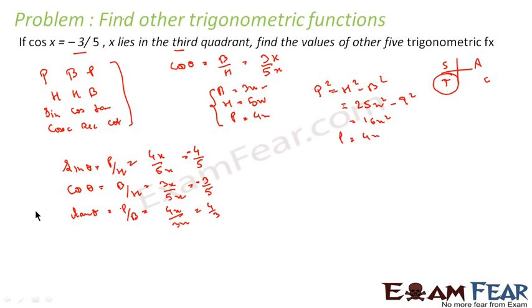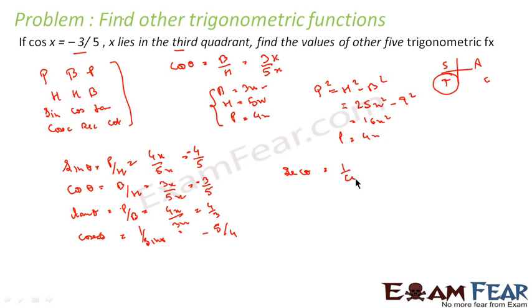So sin is negative, cos is negative, and tan is positive. This gives us the values of sin, cos, and tan. Now we have to find the values of cosec, sec, and cot. Cosec theta is 1 by sin theta, which becomes minus 5 by 4. Sec theta equals 1 by cos theta, which becomes minus 5 by 3 because cos is minus 3 by 5. And cot theta equals 1 by tan theta, which becomes 3 by 4. So we have all the values now.